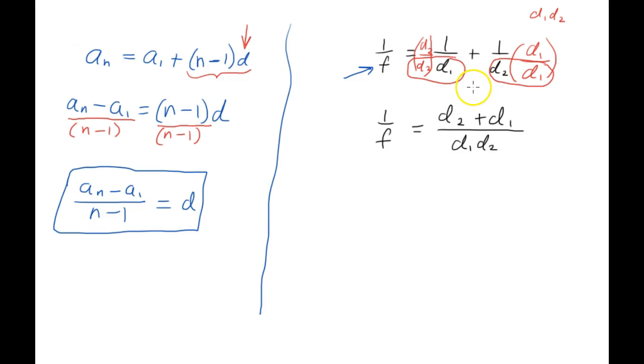Now all we have to do is cross multiply. So let's do that 1 times d sub 1 d sub 2 is d sub 1 d sub 2 and that equals f times d sub 2 plus d sub 1. I'm going to write d sub 1 plus d sub 2 here just because we want to see the 1 first.